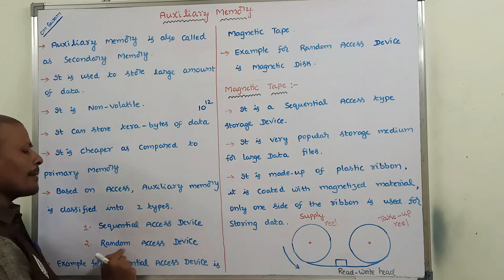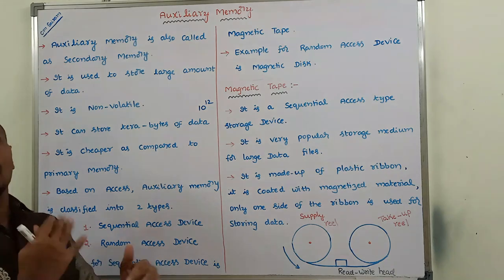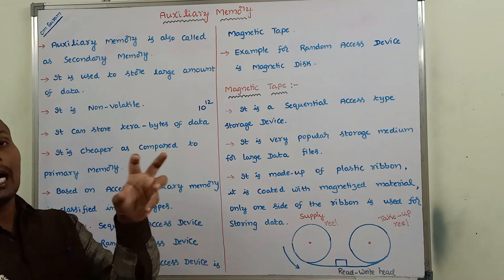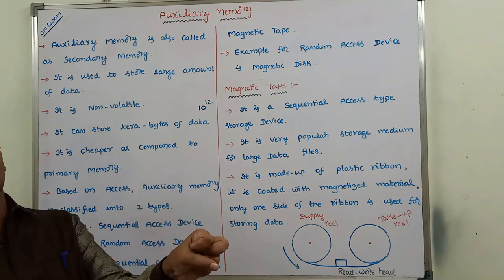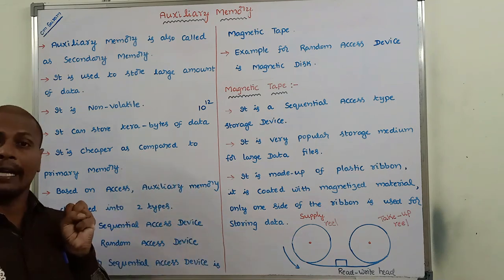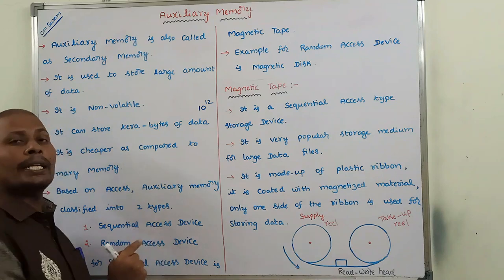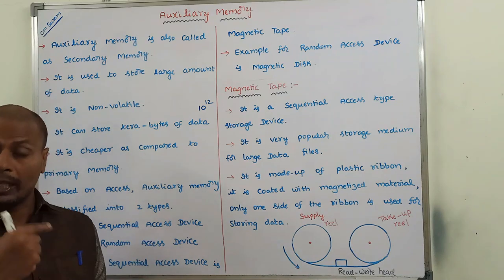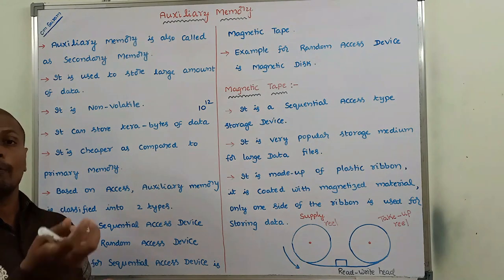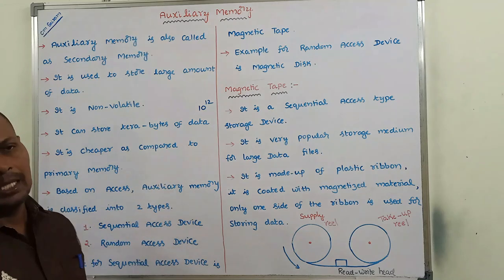In the case of a random access device, whatever data we require, that data can be accessed directly. But in a sequential access device, whatever data we require, that data can only be accessed sequentially.